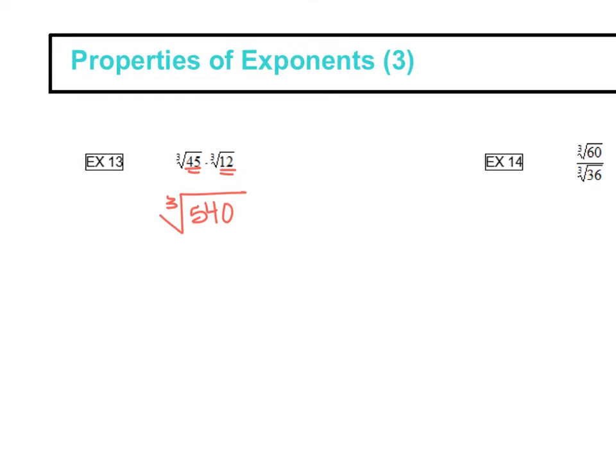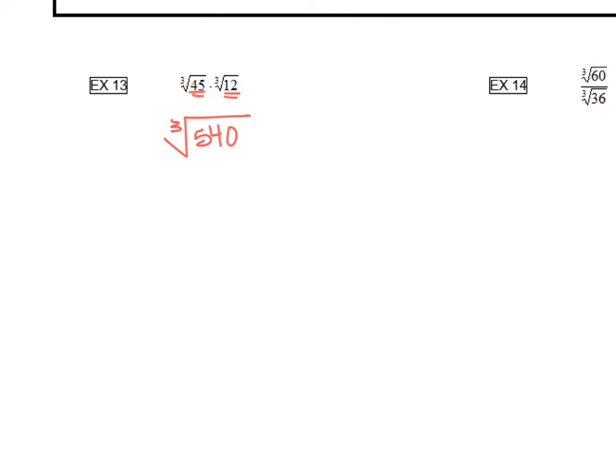Alright, any time that you get a radical with your answer, you want to think about reducing. Can you reduce? And because it's the cube root, we're going to try to reduce with cube root numbers. Remember your cube root numbers: 2 cubed is 8, 3 cubed is 27, 4 cubed is 64, 5 cubed is 125, and we can keep going.